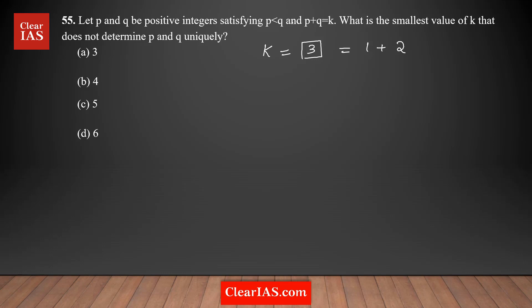The condition is P < Q, so P = 1 and Q = 2. If K = 3, you can find the unique values of P and Q. But the question asks for the smallest K where you cannot determine P and Q uniquely. So option A is eliminated because with K = 3, you get unique values: P = 1 and Q = 2.